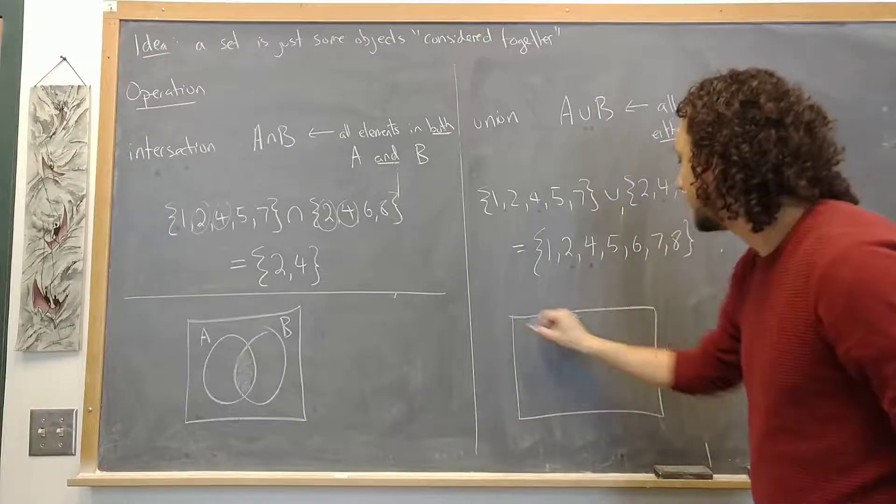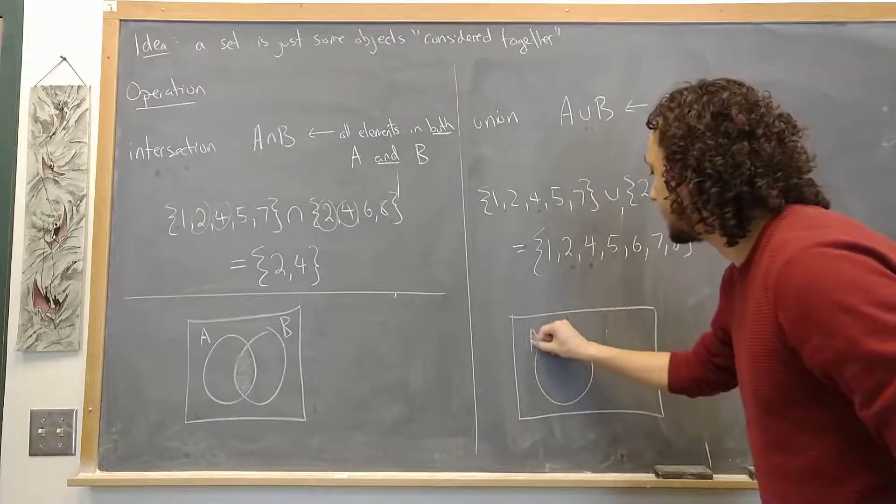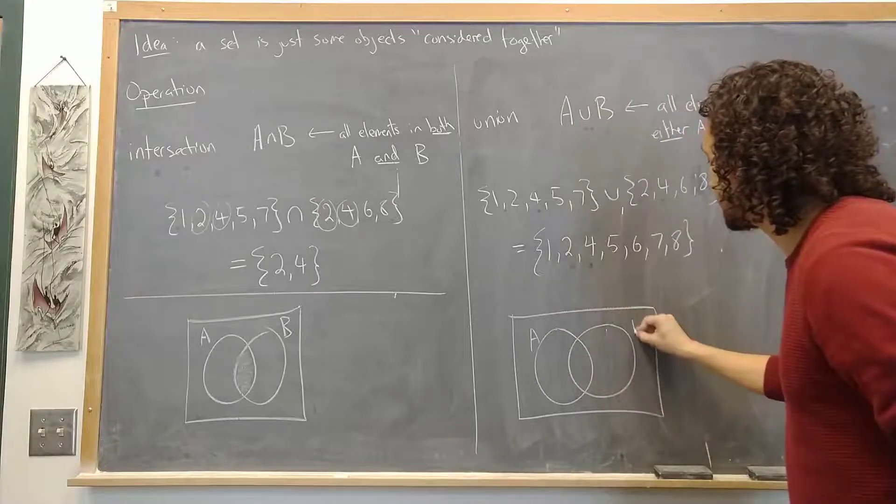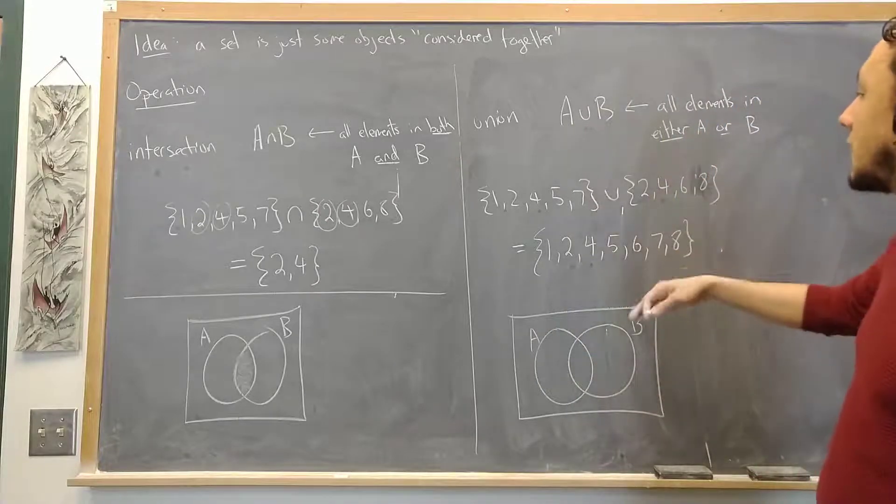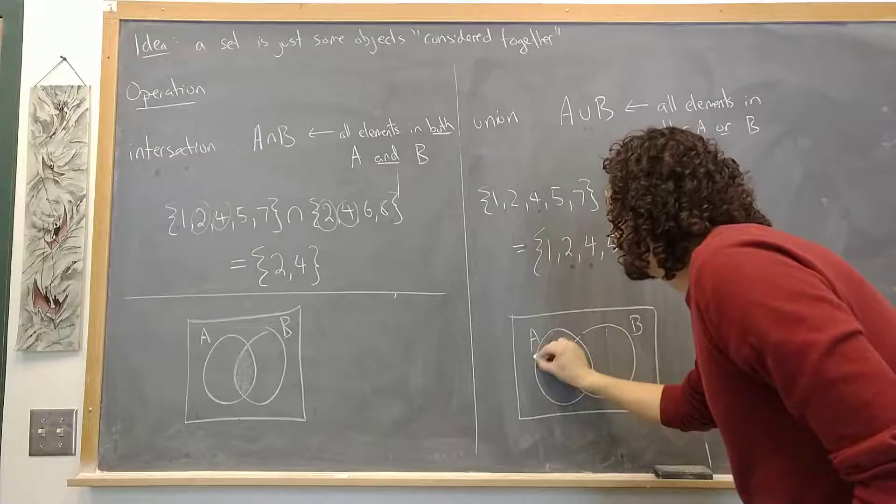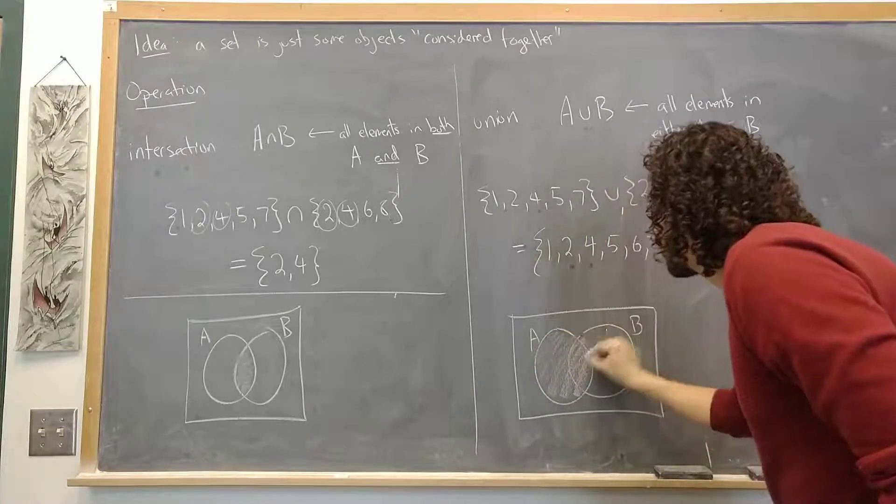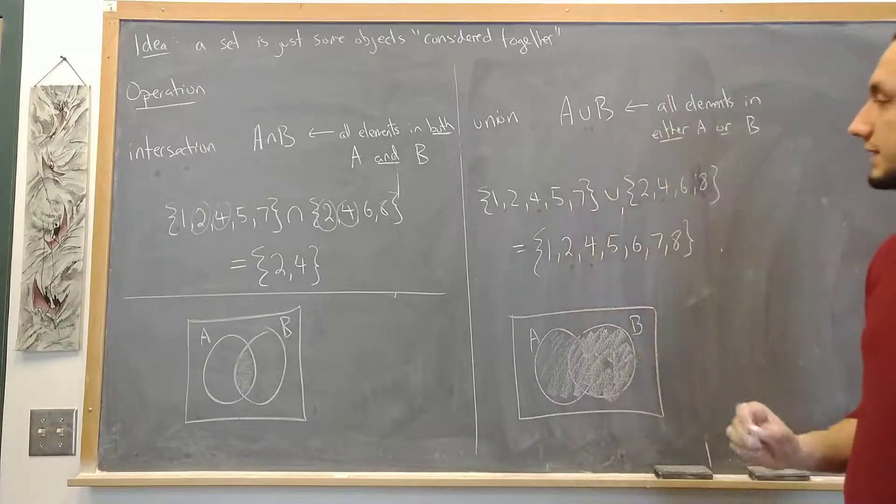And the picture of union, again if I have my set A and I have my set B, union is just everything that's in either one. So the union of two sets is drawn like this.